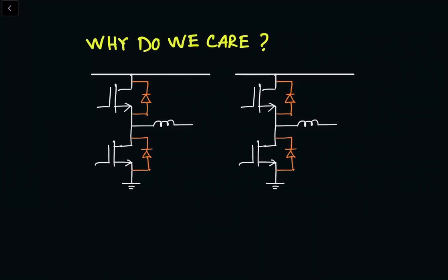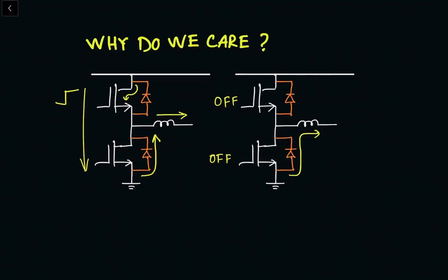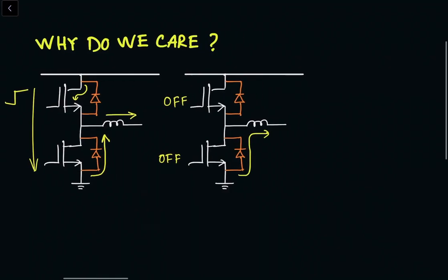So why do we care about third quadrant operation? Here we can see a synchronous buck rectifier. The top switch and the bottom switch should not be turned on at the same time, because then there will be a shoot-through event. When the top switch is turned on, the current flows through the channel and through the load inductor. But when it turns off, we cannot immediately turn on the bottom switch, because that can cause a shoot-through event where the input DC bias is essentially shorted, with a lot of current flowing — we call it the shoot-through event, which can destroy the devices. That's why there is a little dead time during which both devices are off and the current is conducted through the body diode. That's why body diode conduction, or third quadrant conduction, is important.